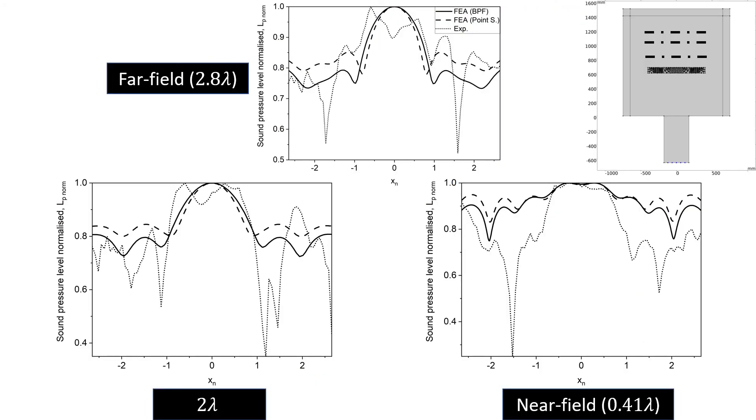Here we observe the normalized sound pressure level along three different reference lines from the metasurface. At the top, we have a far field measurement. On the bottom right, we have a near field measurement. The figure on the left indicates the pressure variation at two wavelengths away from the metamaterial.